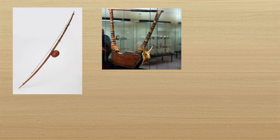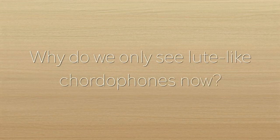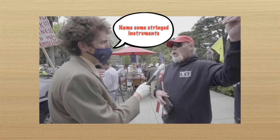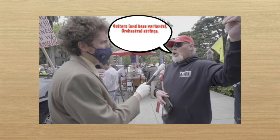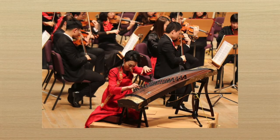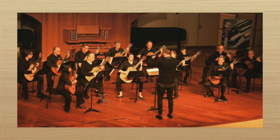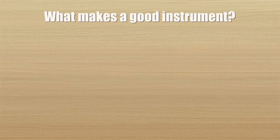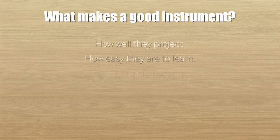Now it's time to talk about the here and the now. So now we know about the ancient origins of musical bows, lyres, harps, zivers and lutes — so how come in our modern western society we only really see the lute-like chordophones? If you ask any random person to name some stringed instruments, they'd probably say guitars and their bass variants, the orchestral strings like violins, violas, cellos and double basses, and maybe add a harp or a banjo or a grand piano. But the chances of them mentioning a lyre or a ziver are very slim. The recurring theme in the modern day is instruments that have a neck. I think there are some important design features that make the chordophones with necks so dominant in western culture, in particular guitars. Those points being how well they project, how easy they are to learn, how portable they are, and finally how versatile they are.